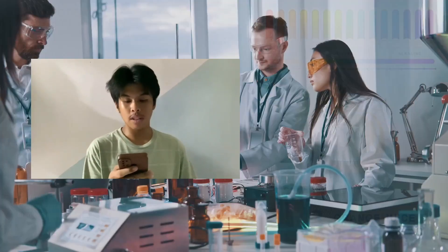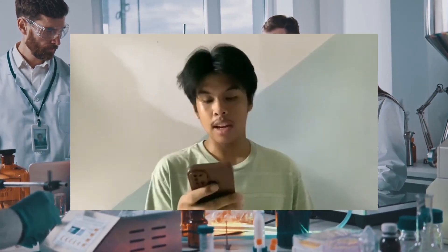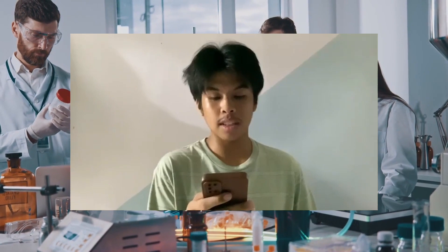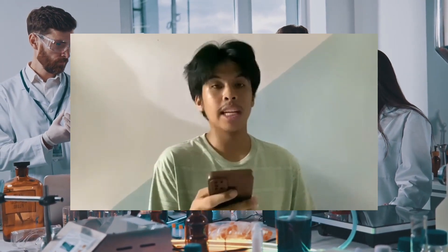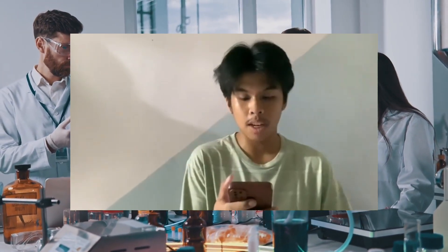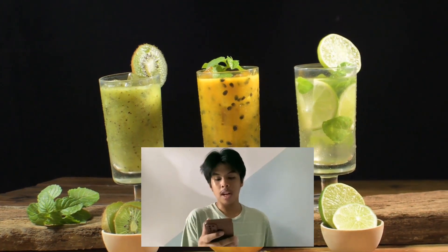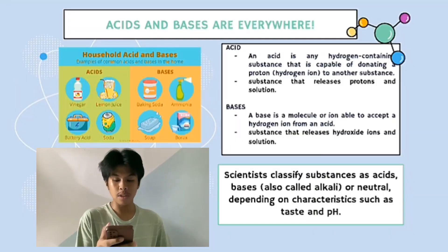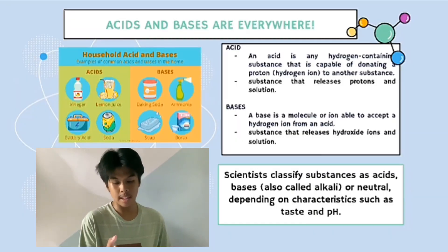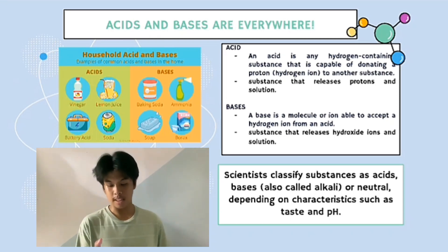The pH scale is used to measure acidity, with lower values indicating stronger acids, higher values indicating stronger bases, and 7 being neutral. Some examples: lemon juice and vinegar are examples of acids, while baking soda and soap are examples of bases.